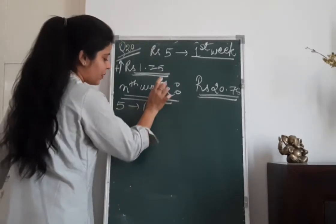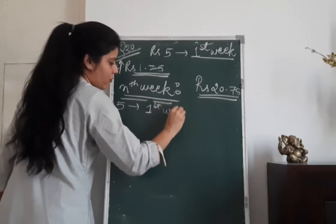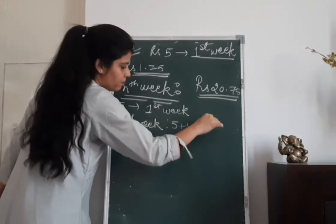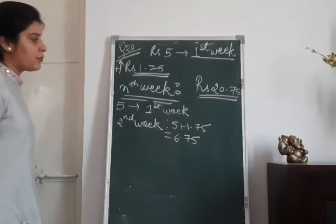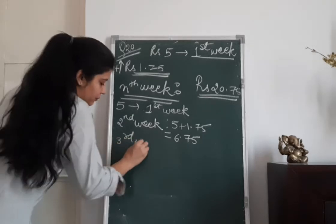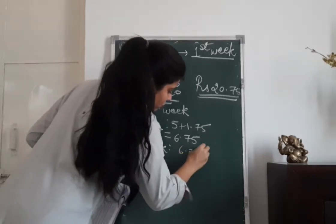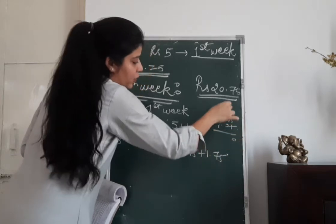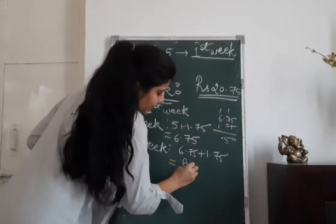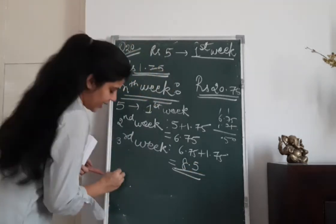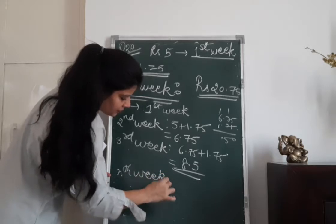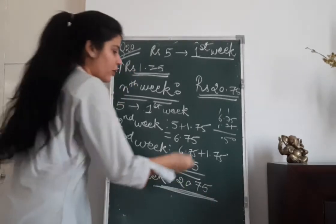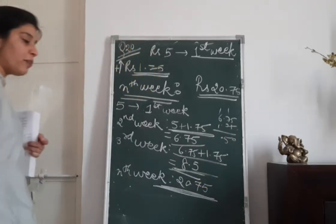In the first week she saved rupees 5. In the second week it will be 5 + 1.75 = 6.75. In the third week it will be 6.75 + 1.75 = 8.5. And in the nth week this becomes rupees 20.75. This is forming an arithmetic progression with a common difference of 1.75.